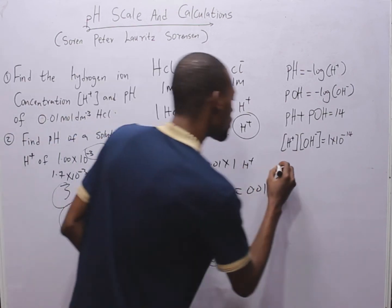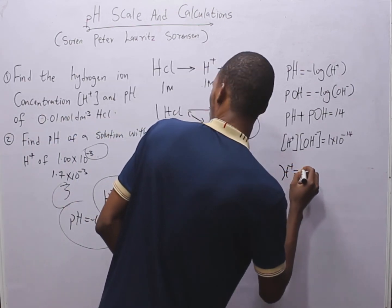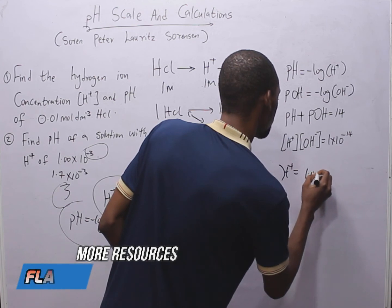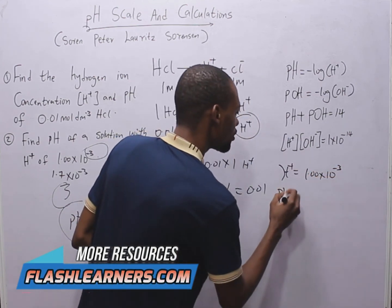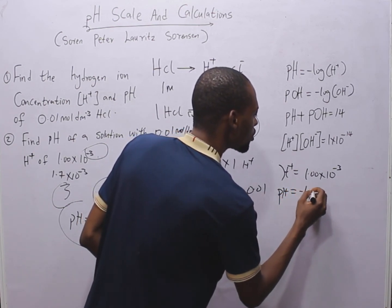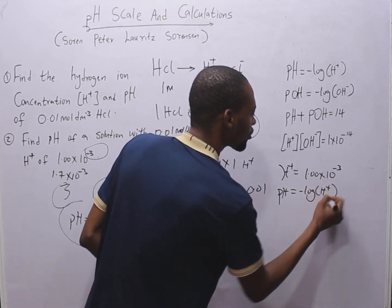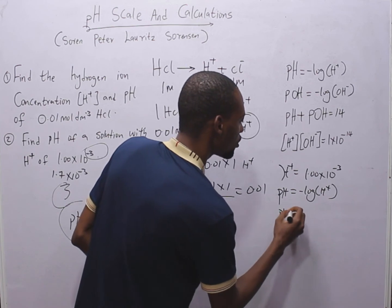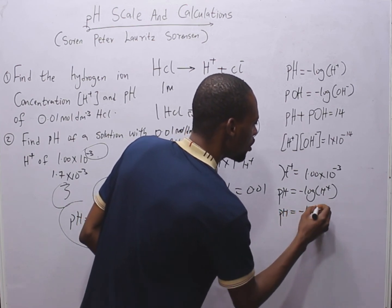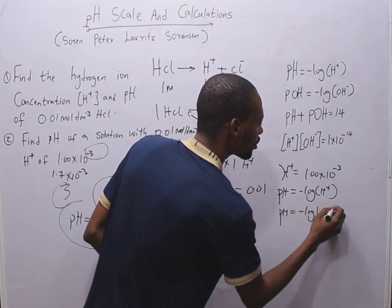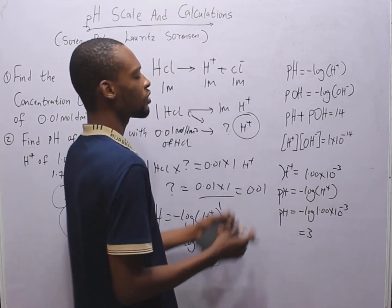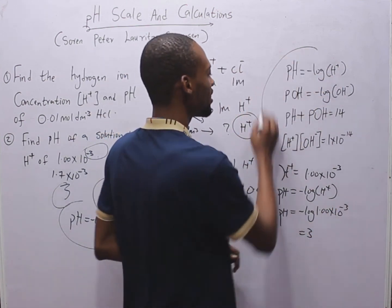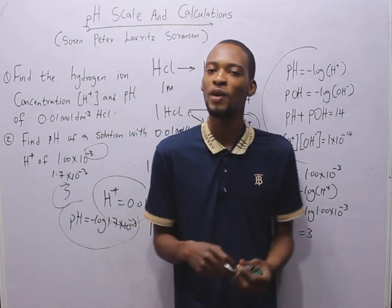In this case, H plus is equals 1.00 times 10 raised to the power of minus 3. pH is simply minus log H plus. pH equals minus log 1.00 times 10 raised to the power of minus 3. So, take note of that and take note of these formulas in case you have questions that require it.